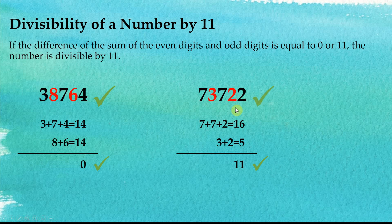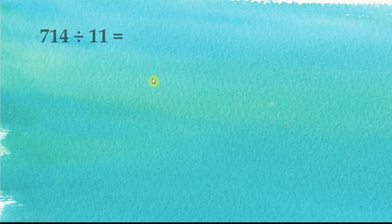So this is how we check the divisibility of numbers by 11. This rule is important for us to perform divisions where 11 is the divisor. Now let's see this example: 714 divided by 11.